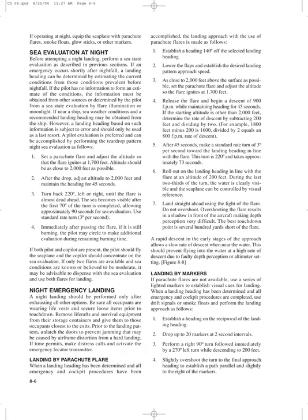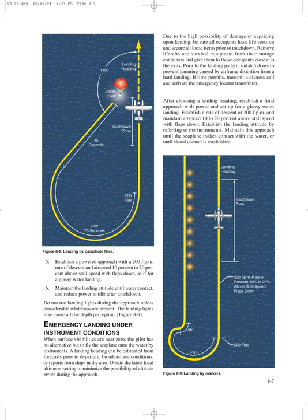If parachute flares are not available, use a series of lighted markers to establish visual cues for landing. When a landing heading has been determined and all emergency procedures are completed, use drift signals or smoke floats and perform the landing approach as follows: establish a heading on the reciprocal of the landing heading, drop up to 20 markers at 2-second intervals, then perform a right 90-degree turn followed immediately by a 270-degree left turn while descending to 200 feet. Slightly overshoot the turn to the final approach heading to establish a path parallel and slightly to the right of the markers. Establish a powered approach with a 200 fpm rate of descent and airspeed 10–20% above stall speed with flaps down, as if for a glassy water landing. Maintain the landing attitude until water contact, and reduce power to idle after touchdown. Do not use landing lights during the approach unless considerable whitecaps are present, as landing lights may cause false depth perception.